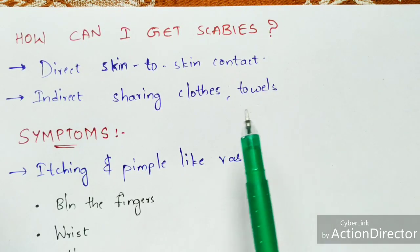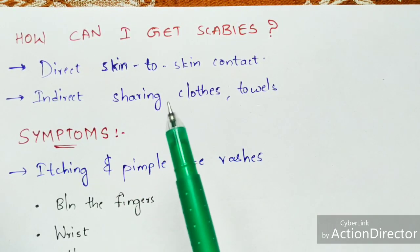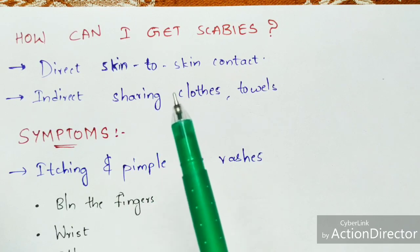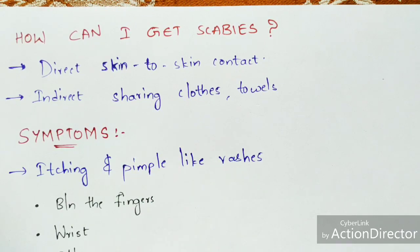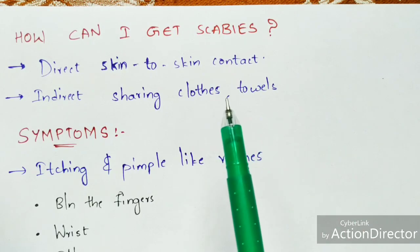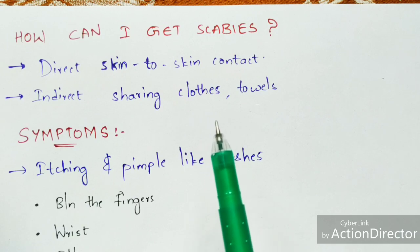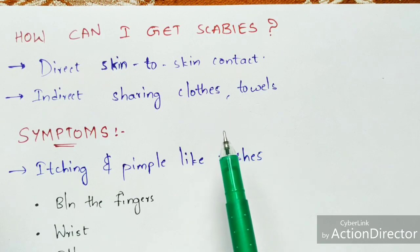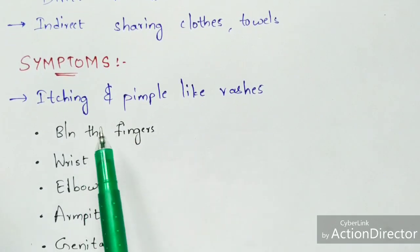Coming to the indirect method: sharing clothes or towels of an infected person can spread scabies. For example, if an infected person wore clothes and you wear the same shirt or pants, the itch mite parasite present in those clothes will enter your body and the life cycle repeats. Similarly, using towels already used by an infected person can also cause you to suffer from scabies disease.